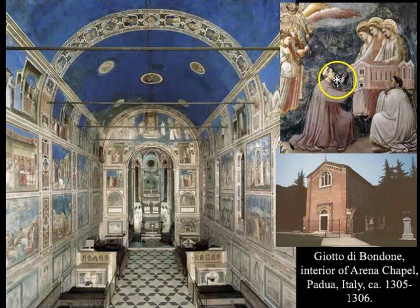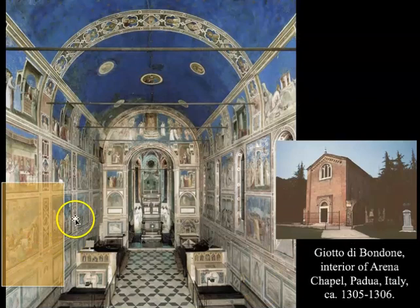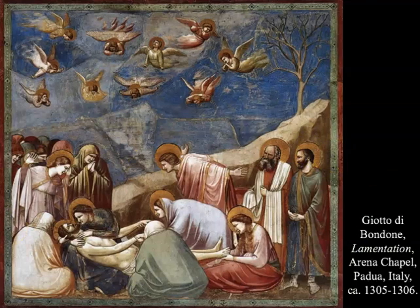This is also called the Scroveni Chapel because Enrico Scroveni commissioned this series of paintings. It has several cycles: a complete Christian cycle involving the life of the Virgin Mary and her parents, as well as the life and mission of Christ within the passion and crucifixion. We're going to look at the Lamentation on the wall, where you really start to see some of the naturalistic characteristics coming out in Giotto's work that make him the father of the Renaissance.